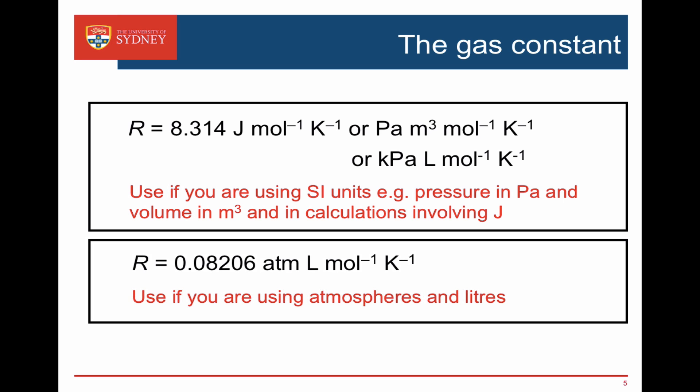But if you get given values in atmospheres and liters then you want to use the second value. You want to use R equals 0.08206 atmosphere liter per mole per Kelvin. Pick the value you use and you don't have to do any conversions of pressure units.